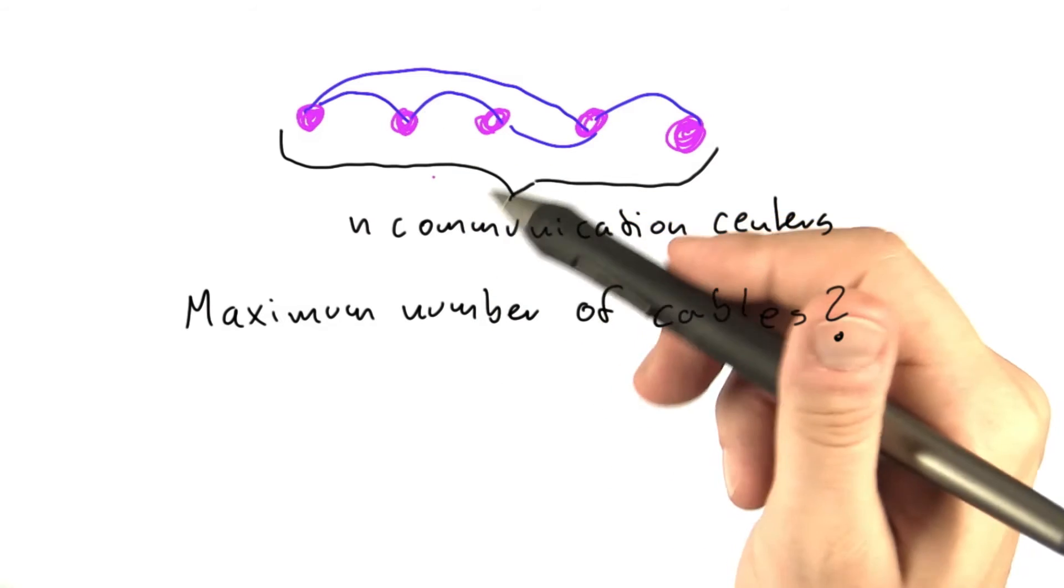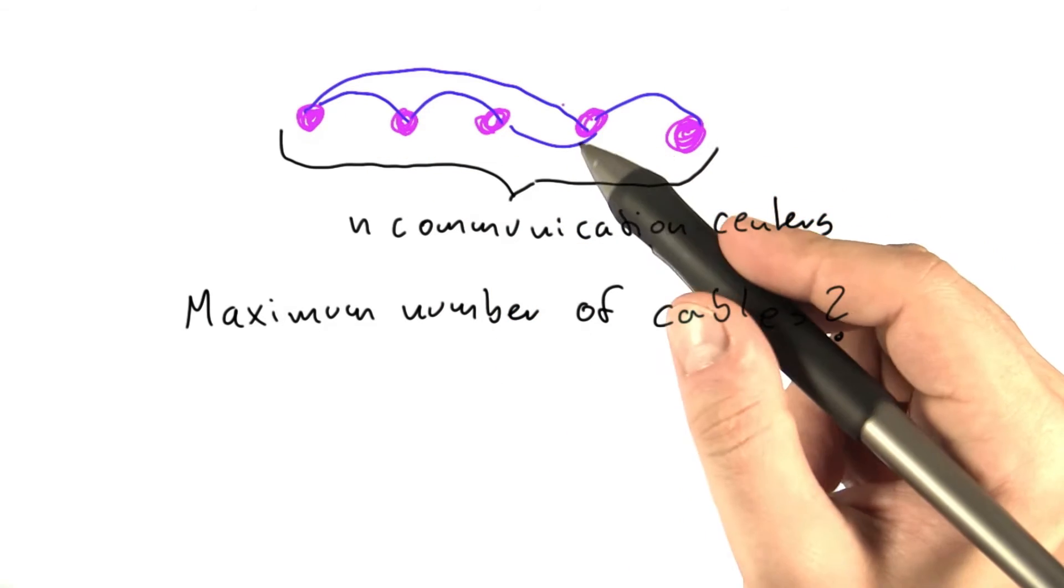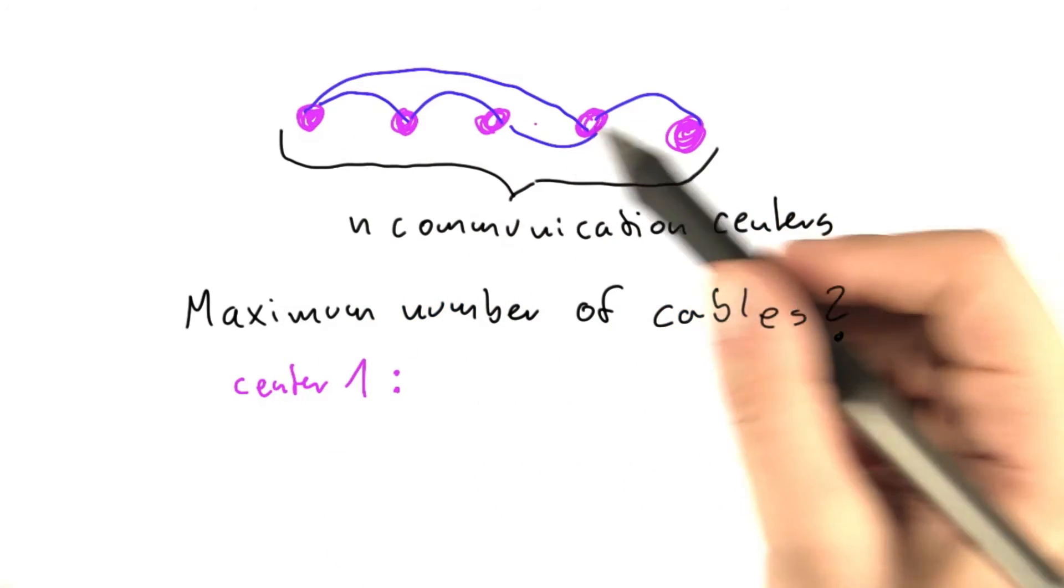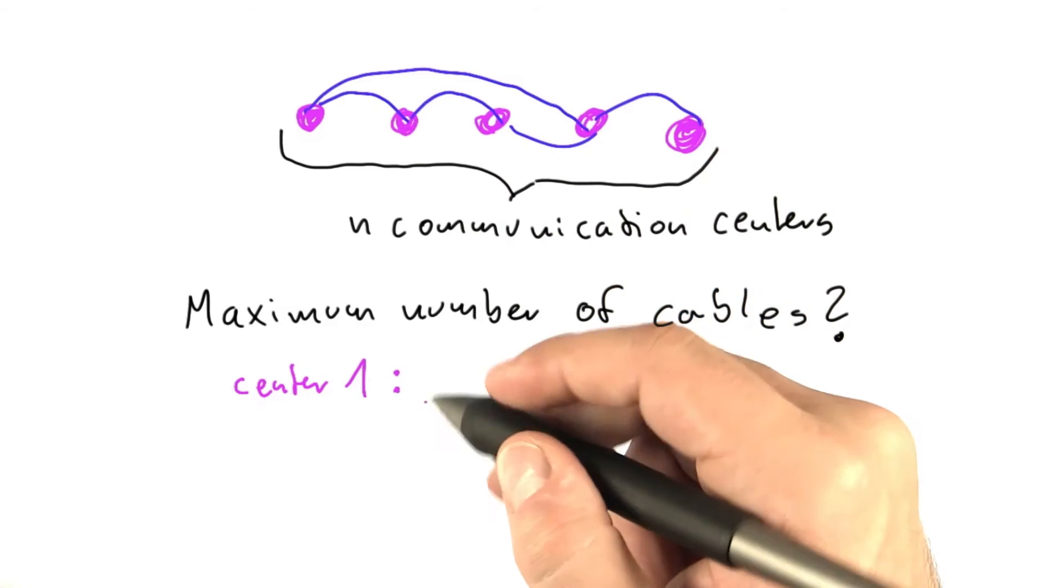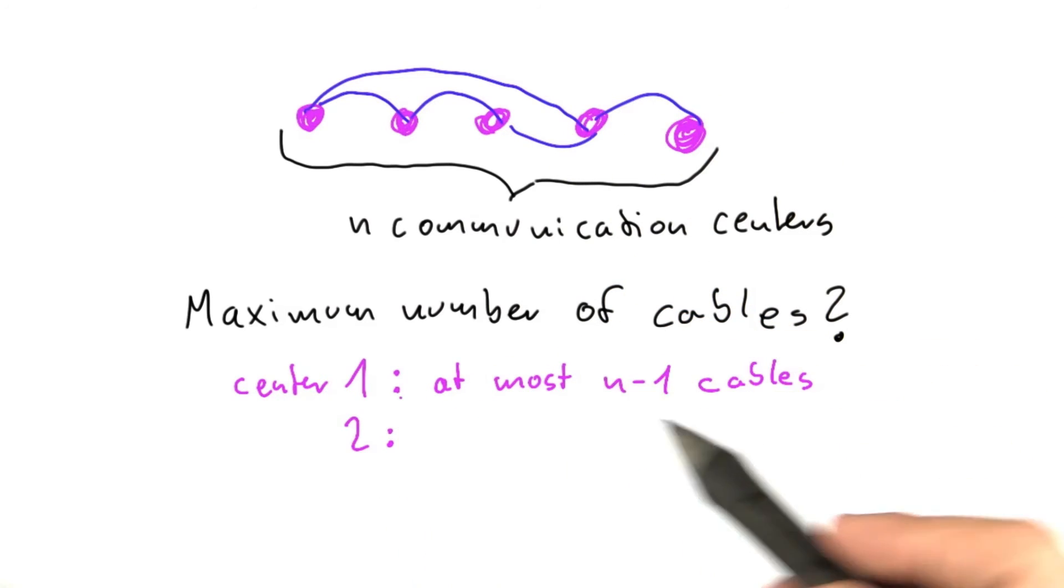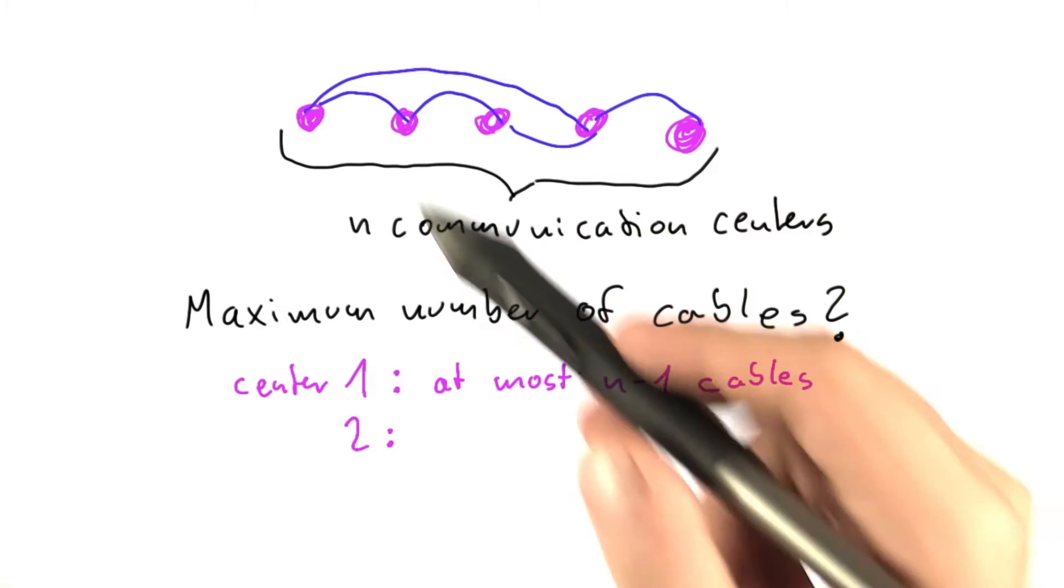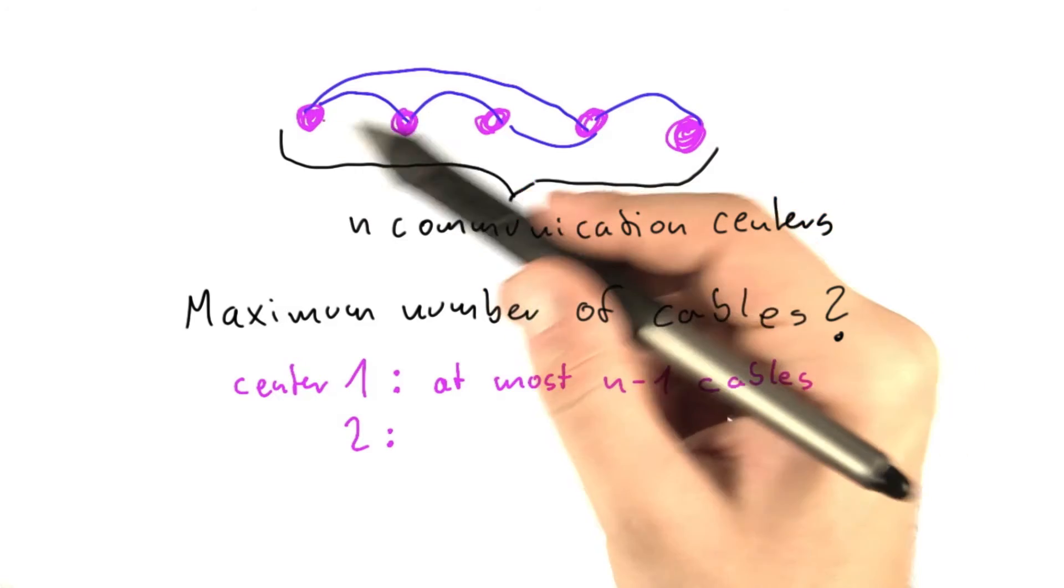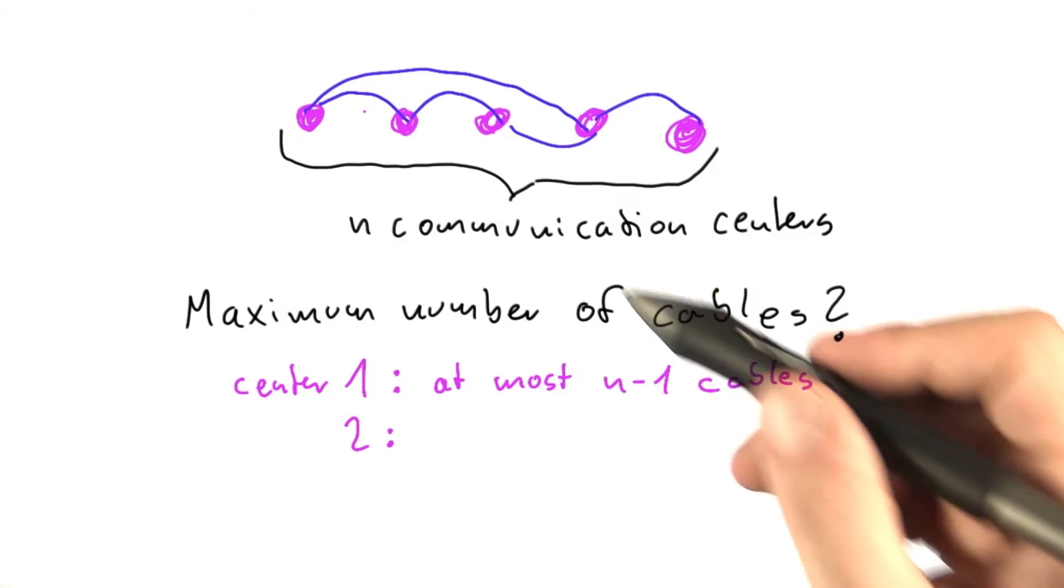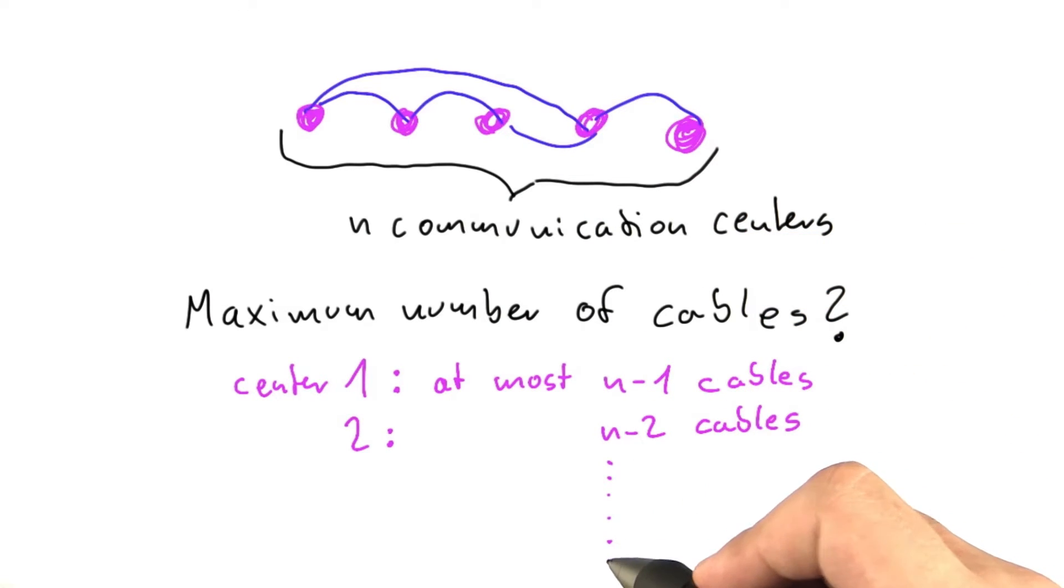So the question here is what is the maximum number of cables that we can have. And that is actually very similar to the running time of the algorithm that you analyzed in the quiz a few minutes ago. Because the first communication center can be connected to n-1 other communication centers. Then the second one, it can also be connected to n-1 other centers, but of course we don't want to double count. Or actually it doesn't really matter if we double count or not because we're using O notation. But if we don't double count, then it's just n-2 cables here.